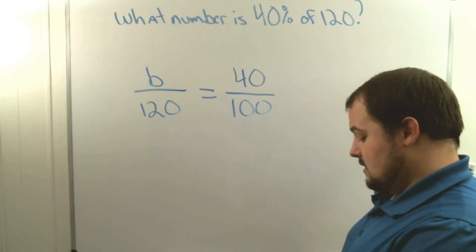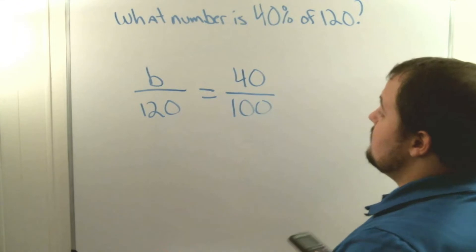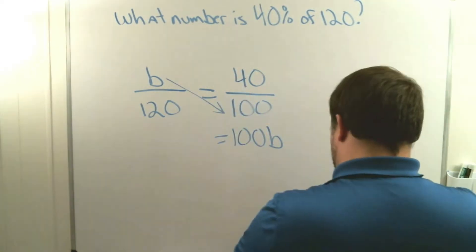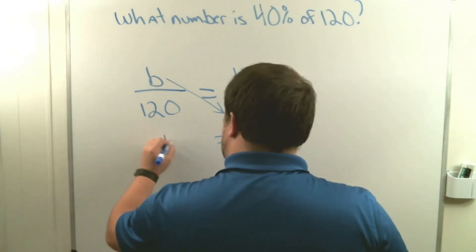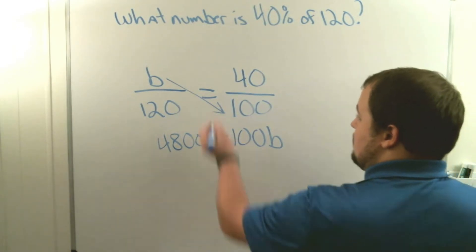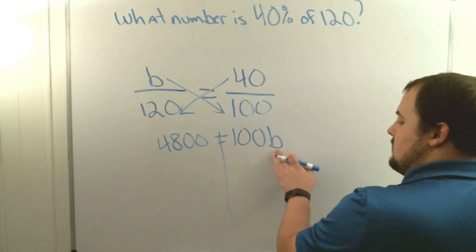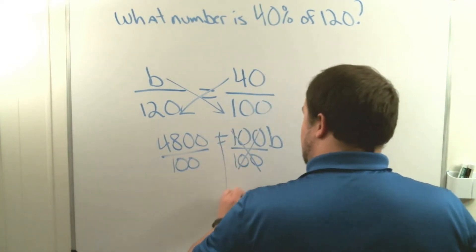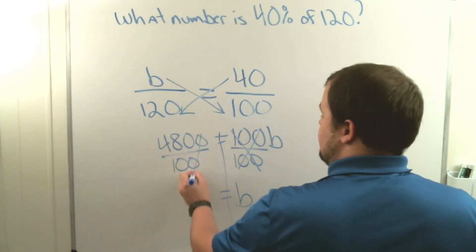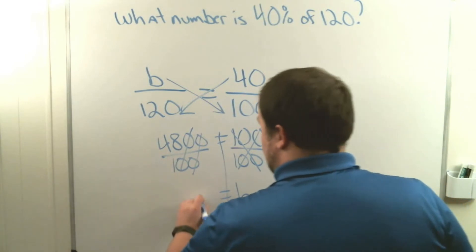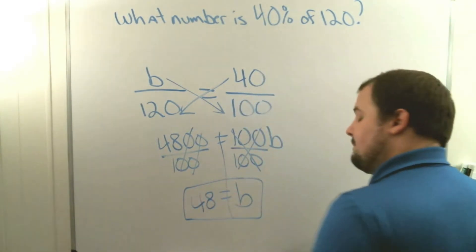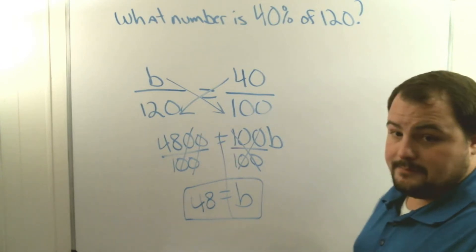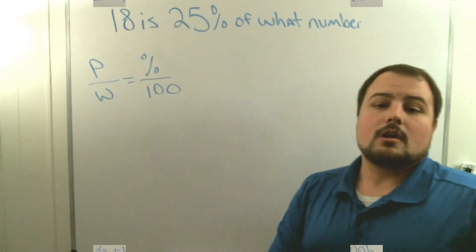Now we cross multiply: b times 100 is 100b, and 40 times 120 equals 4,800. Remember to divide by the number with the variable, so divide both sides by 100. This cancels out and we get b equals 4,800 divided by 100. The zeros cancel and we get 48 divided by 1, so b equals 48. That means 48 out of 120 is 40 percent of that amount.